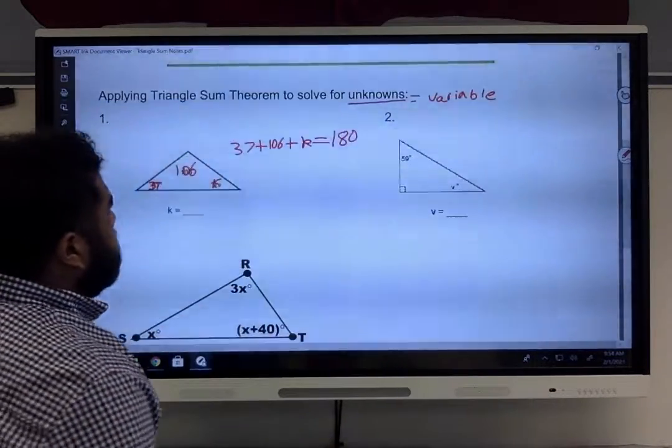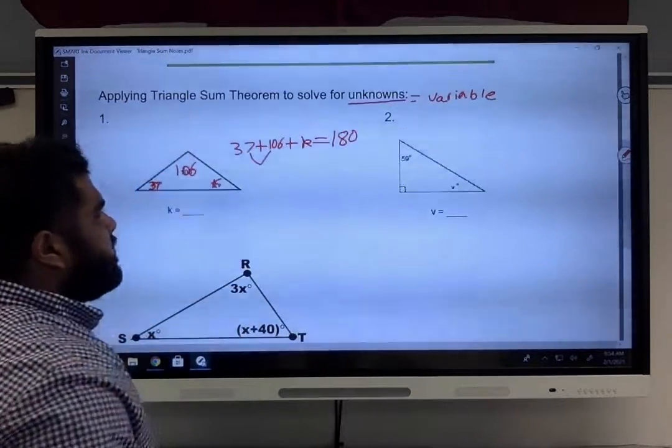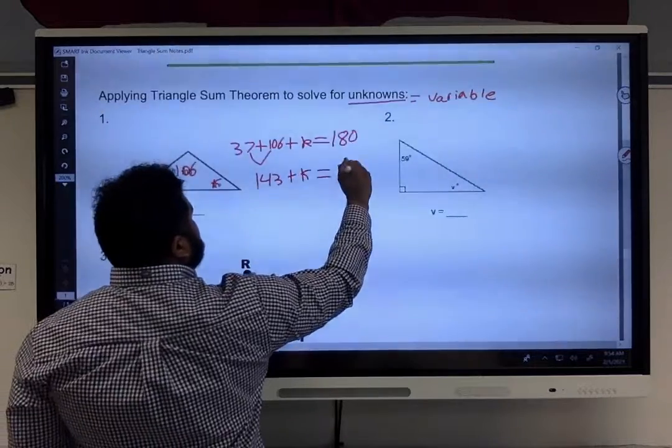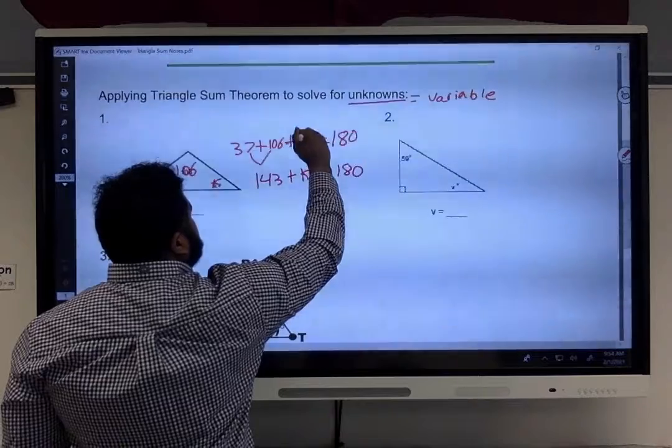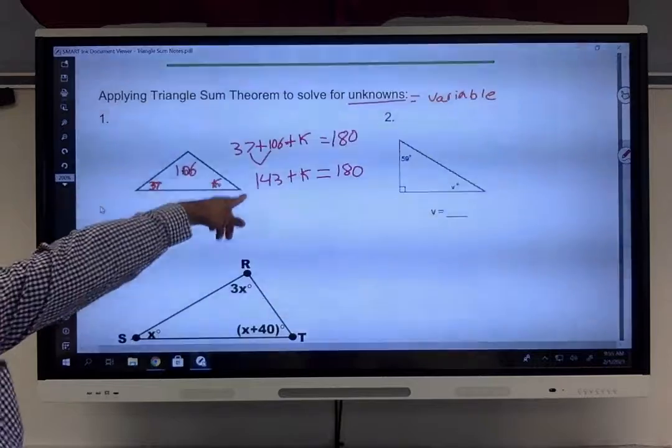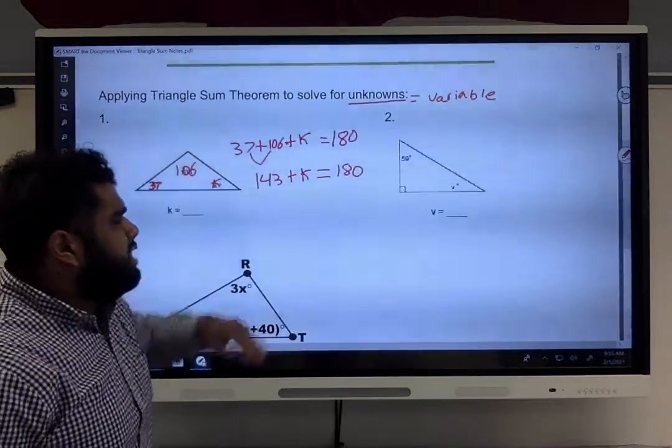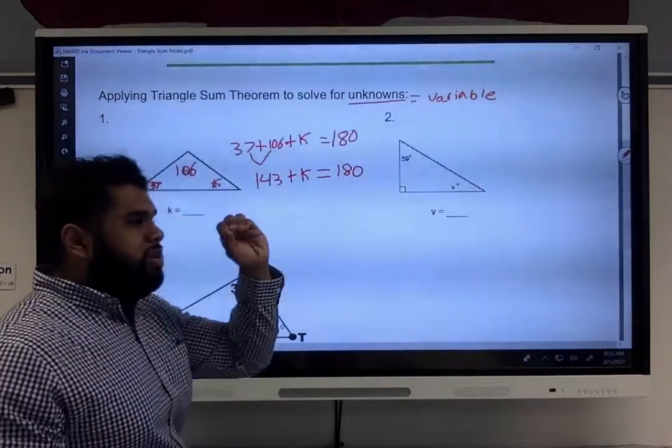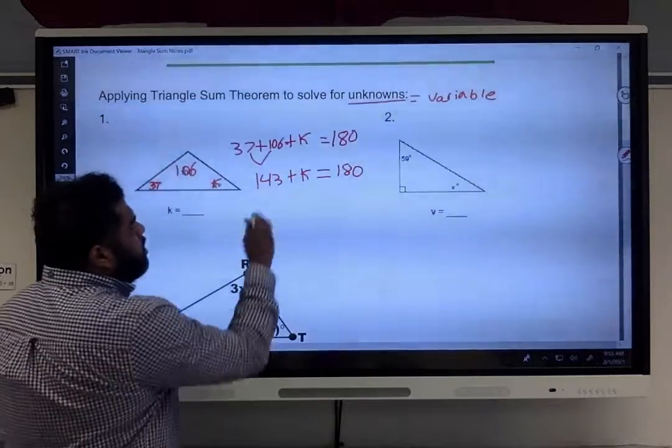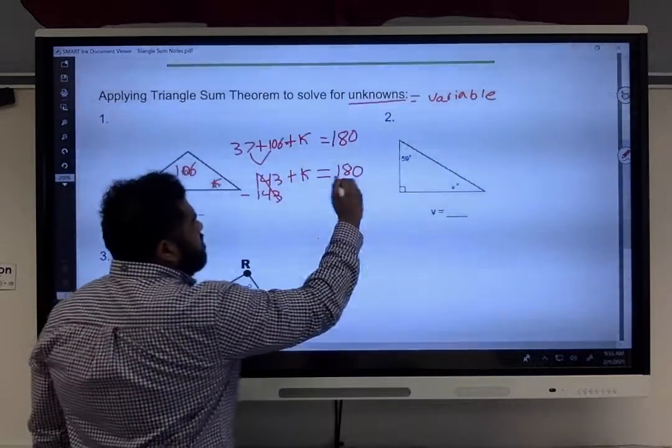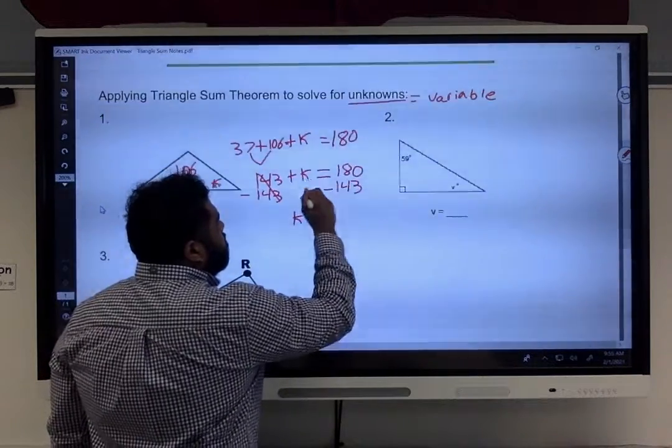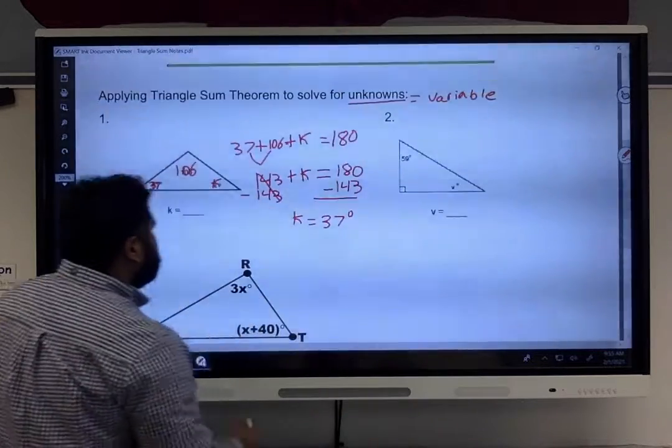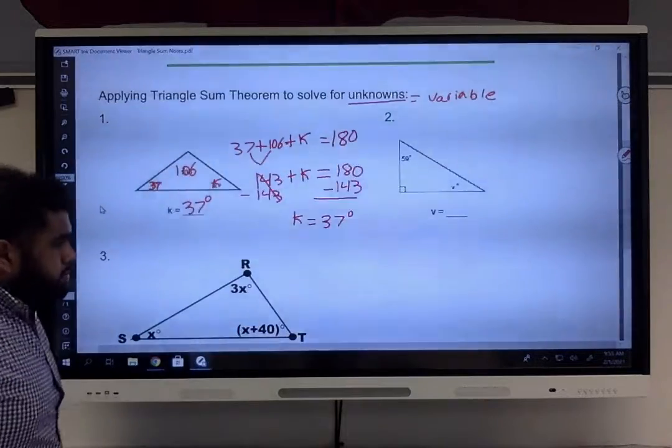Now, what I can do is add up these two numbers, our constants. So 37 plus 106 will equal 143 plus K. So 143 plus K will equal 180 degrees. So that's saying, now we're trying to find this missing angle. So how do I solve for that missing angle? Well, I need to get this 143 out of here, so I subtract 143 from both sides. So now we're left with K equals 180 minus 143 will give you 37 degrees. So K equals 37 degrees.